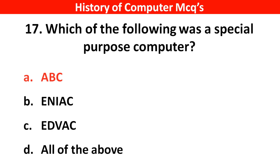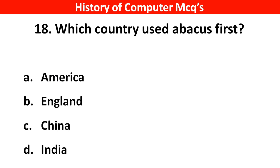Next question. Which country used the abacus first? Options A: America, B: England, C: China, D: India. Right answer is option C, China.